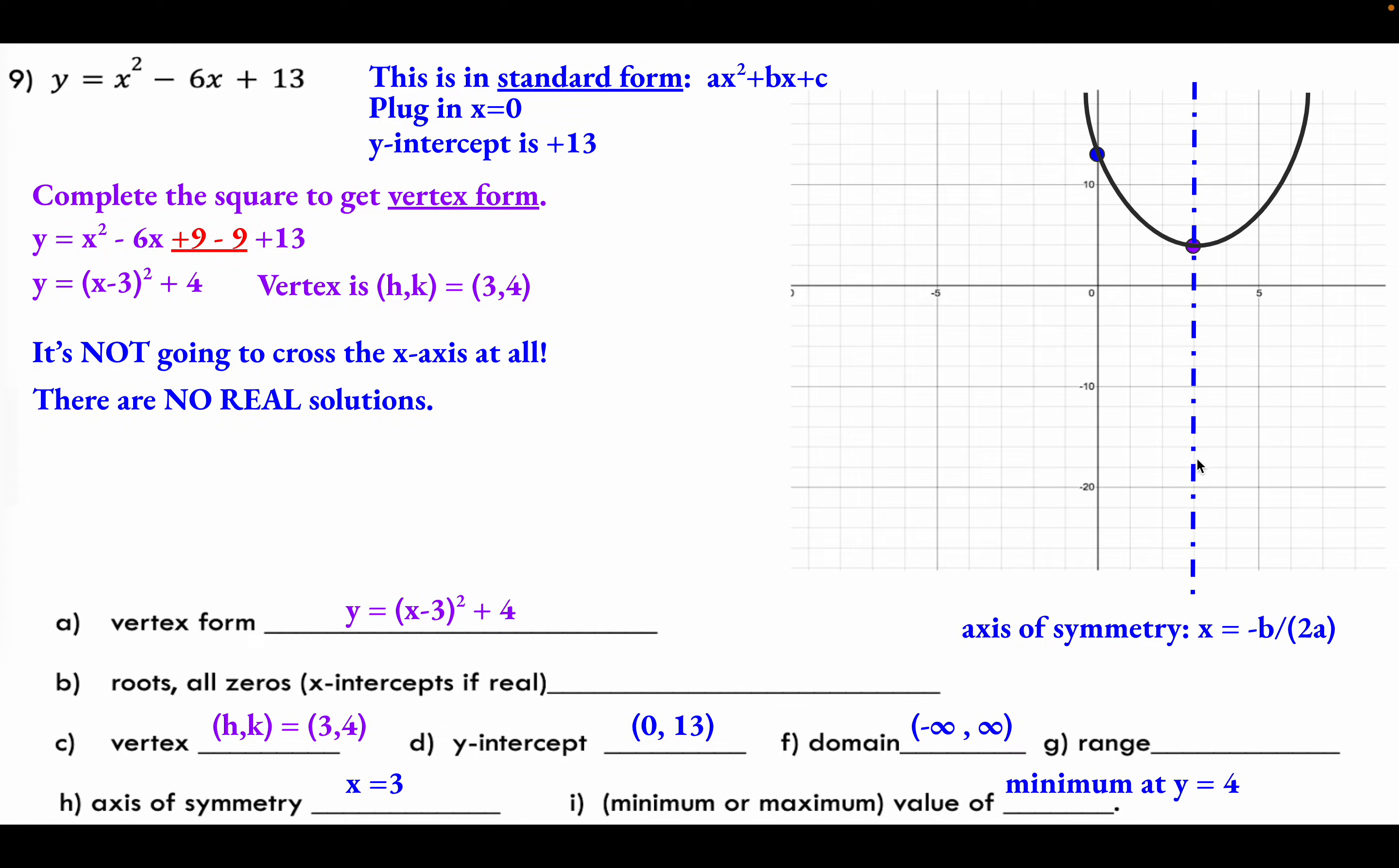The range, which we'll look at next, well that's just the acceptable y values. And you can tell that that's going to be anything 4 and up. So we're going to write it like this. You use the square bracket if you actually include the 4. So it's 4 and anything above 4. So it goes all the way up to infinity.